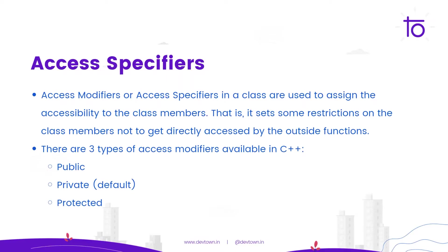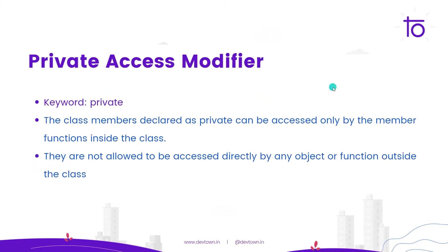There are three types of access modifiers available in C++: public, private, and protected. By default, if you don't mention a particular access modifier, it will default to private. The private access modifier is mentioned using the keyword private, and the class members declared as private can be accessed only by the member functions inside the class.